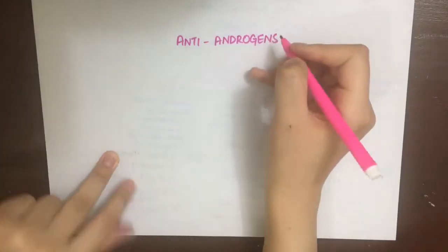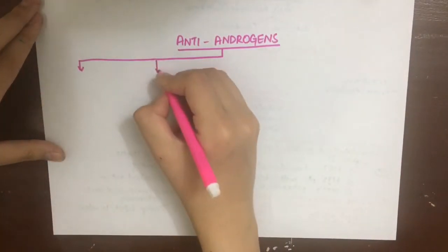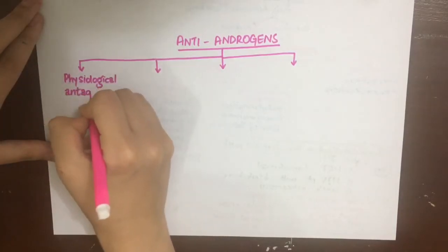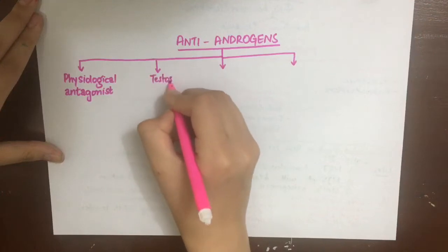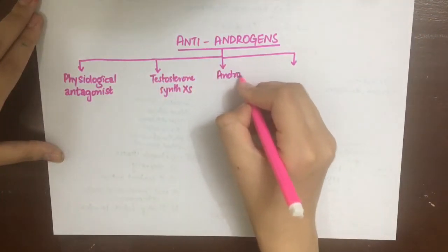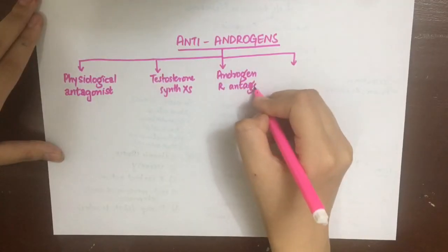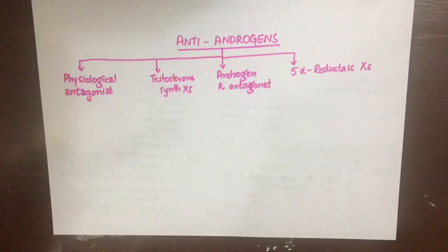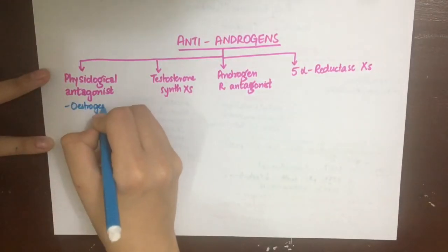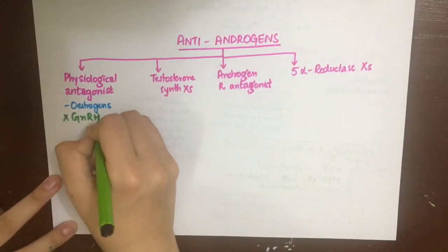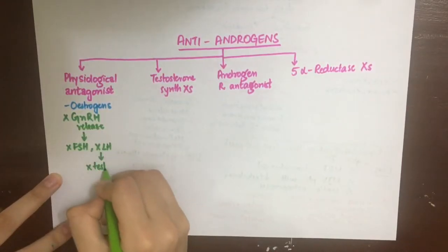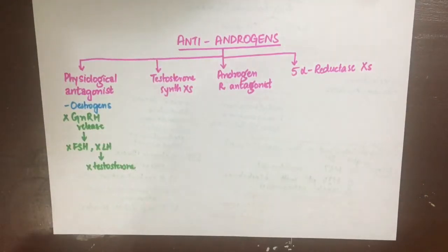Anti-androgens oppose androgenic action by four different ways: physiological antagonists of androgens, drugs that inhibit testosterone synthesis, androgen receptor antagonists, and 5-alpha reductase inhibitors, which inhibit the conversion of testosterone into DHT (dihydrotestosterone), the active form. The physiological antagonist of androgens is estrogen, which inhibits GnRH release and thus inhibits FSH and LH, and since LH is necessary to secrete testosterone, testosterone is also inhibited.